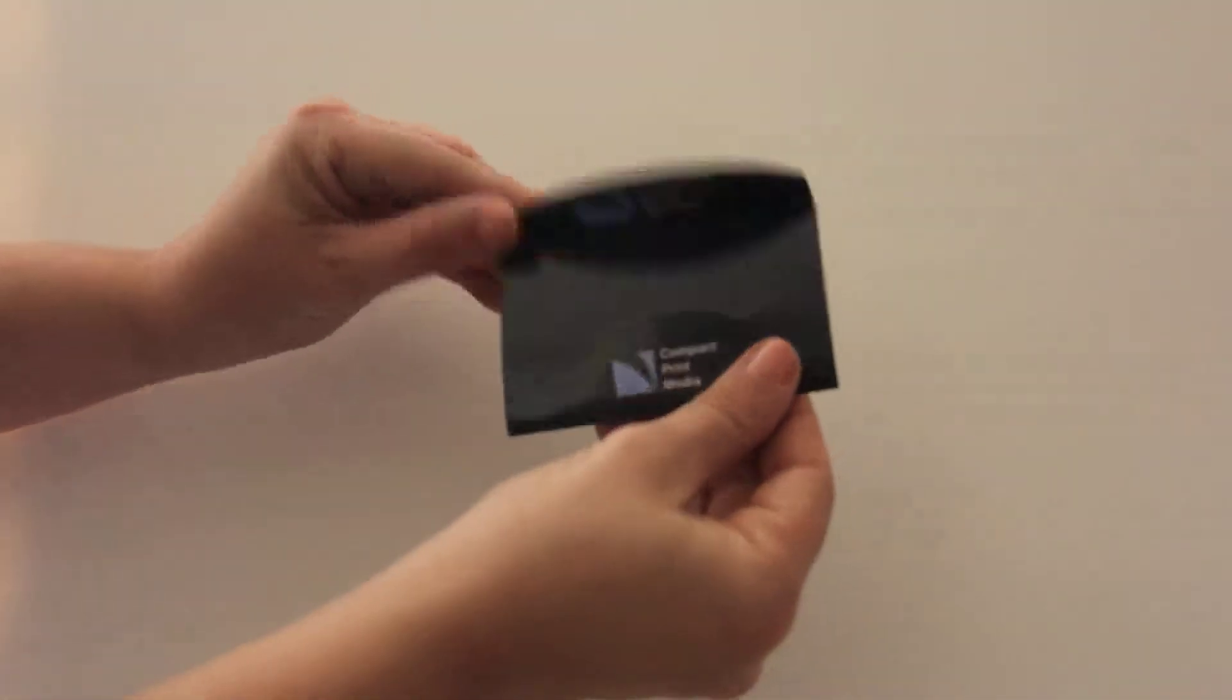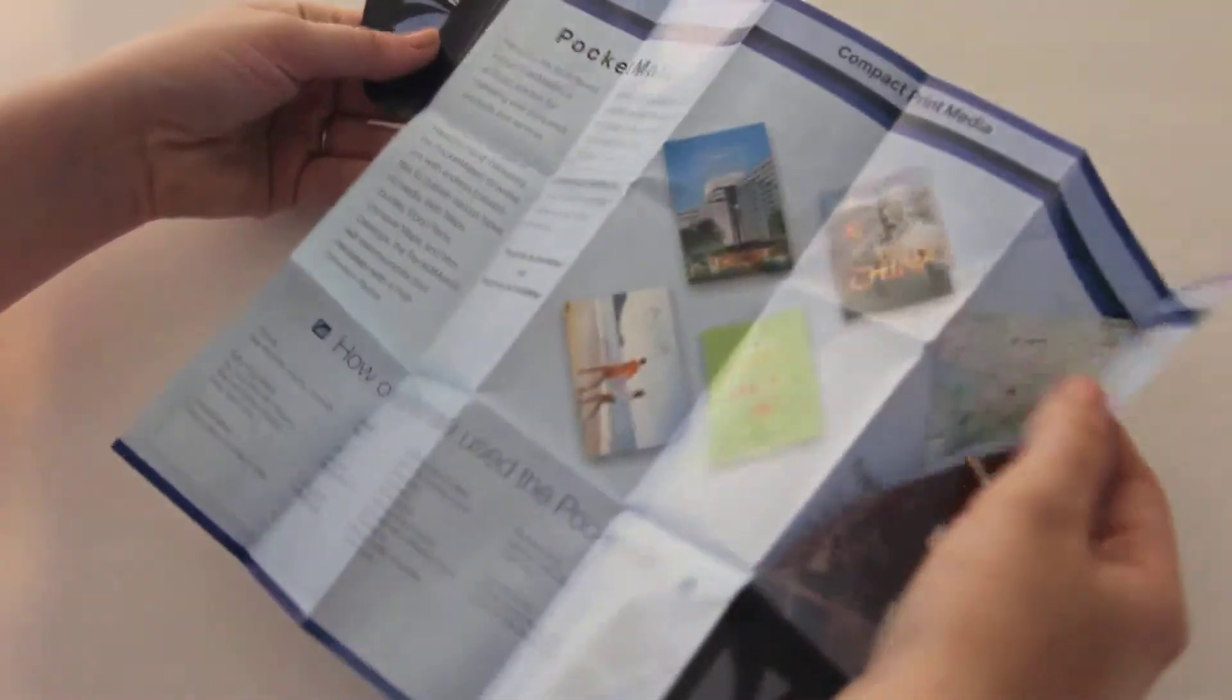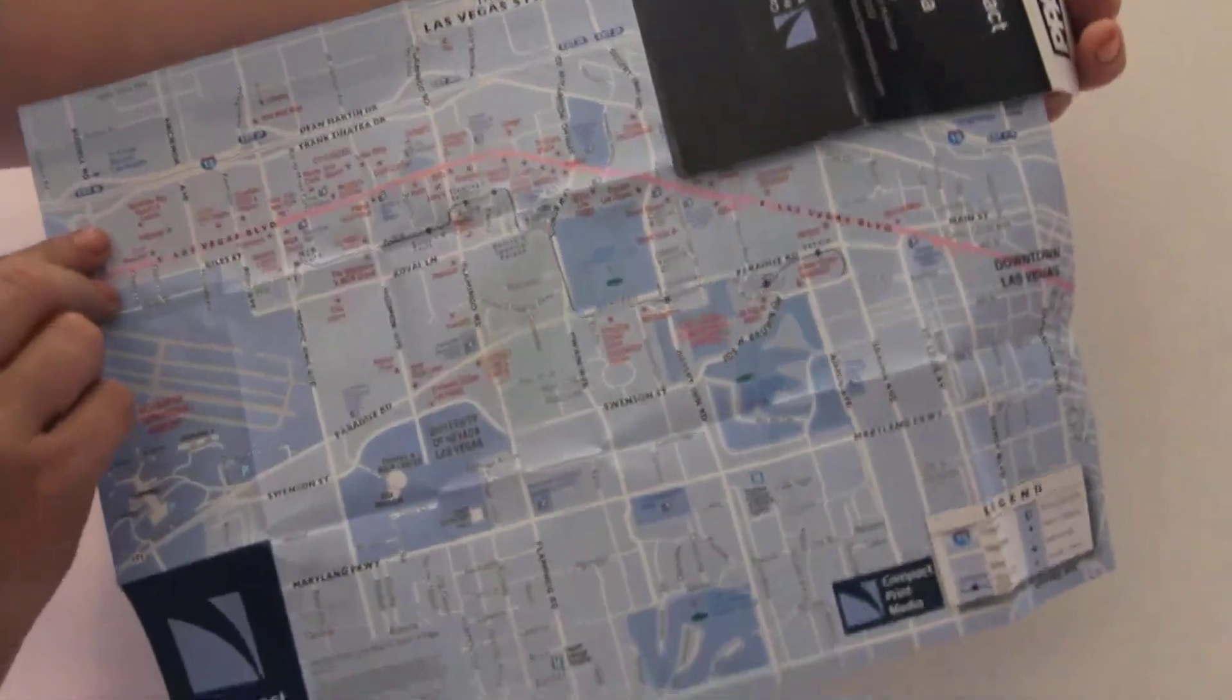And here is the pocket map. It is the size of a business card and is very customizable. This makes it the perfect handout for people at trade shows. Use it for printing a vendor floor map of a trade show and the event schedule.